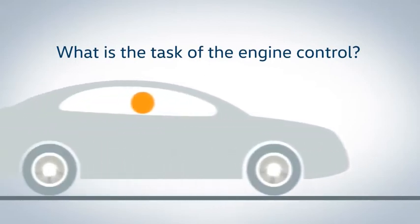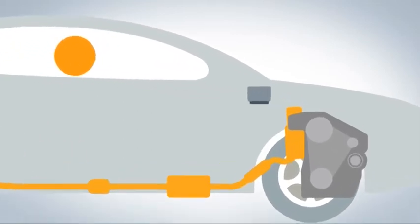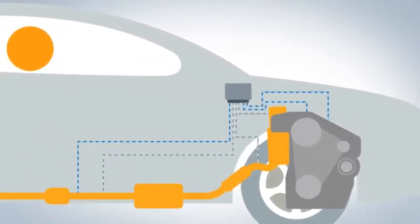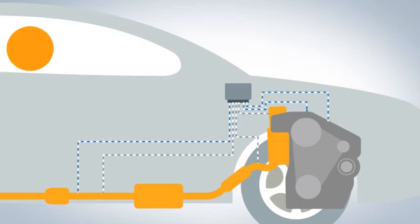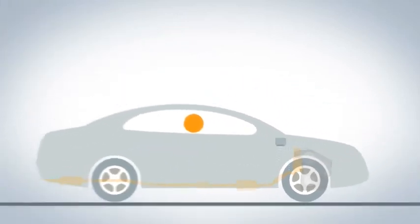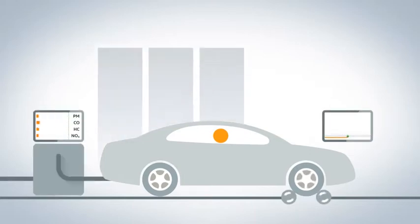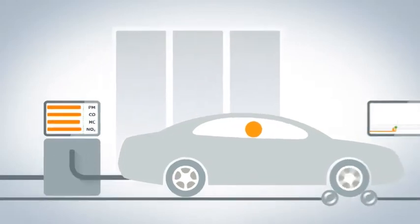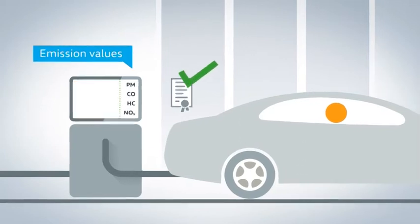An important part of a modern engine is the engine control. Its complex software processes the signals of many sensors in the vehicle and ensures that the cars offer good performance profiles with the lowest possible consumption, while complying with the required exhaust standards at the same time. Testing determines whether a vehicle fulfills the legal requirements: the vehicle runs with a defined speed curve while exhaust gas values are measured. If the model fulfills the required specification during type testing, then every vehicle in the series is certified for this emission standard.